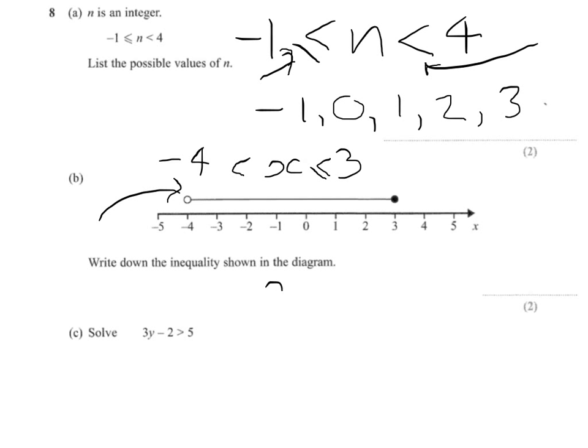Finally on to the inequality, we've got 3y will be greater than 5 plus 2, so when you move something across the inequality sign, just like with the equation, it changes its sign, so that gives me 3y is greater than 7.